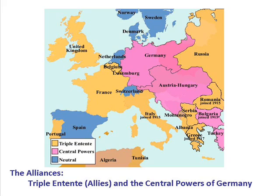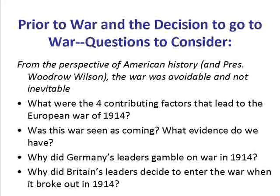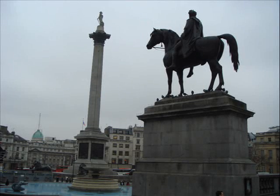Why did British leaders decide to enter the war in 1914? England could have had a limited involvement in the war, and German politicians gambled on this. The British government, under the Articles of the Triple Entente, was not legally obligated to fight in defense of France or Russia. The argument for the British to go to war rested on the belief of Germany's true war aims. They believed they consisted of the following factors.